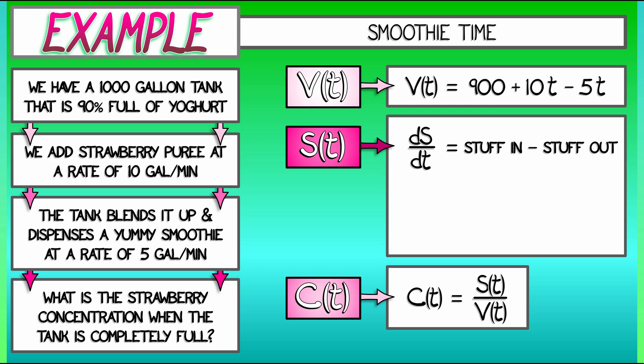So we're adding strawberry puree at a rate of 10 gallons per minute. That means we have a contribution of 10 to dS/dt. What are we taking away? Well, we're taking away stuff at a rate of 5 gallons per minute. So we've got a 5, but we're not taking out just strawberry puree. We're taking out the mixture.